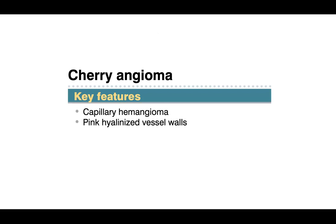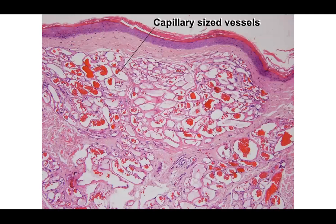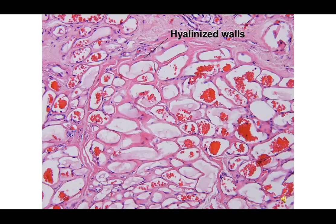Cherry angiomas are thought to be capillary hemangiomas. They have numerous thin-walled vessels, and you'll notice pink hyalinized vessel walls. Here's an example of the proliferation of those thin-walled capillary-sized vessels throughout the dermis. You can see the hyalinized nature of the walls between the lumens here.